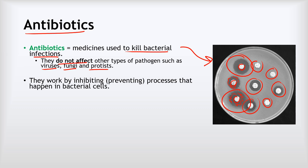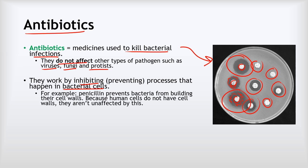Antibiotics work by inhibiting — that means preventing — certain processes that happen in bacterial cells. Because viruses, fungi and protists work in different ways, antibiotics won't affect them in the desired way. An example is penicillin — the first antibiotic we discovered, still commonly prescribed today. It prevents bacteria from building their cell walls. Because human cells don't have cell walls, we're not affected by it — only the bacterial cells are.